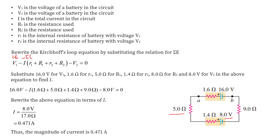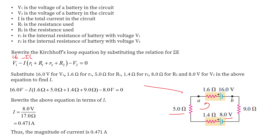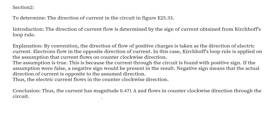We have calculated the current flowing through the circuit as 0.471 ampere. Now we check whether the assumed direction of current is correct. Since we assumed current flowing counterclockwise and the value of i comes out positive, our assumption is correct — the current flows counterclockwise with magnitude 0.471 ampere.